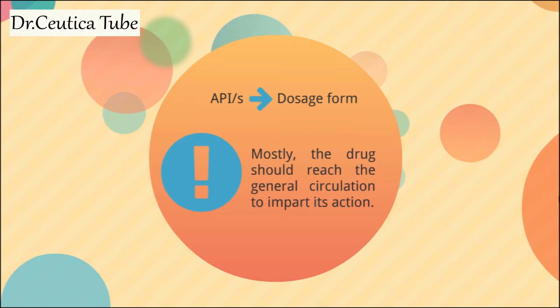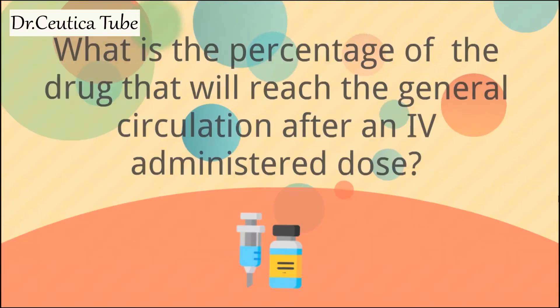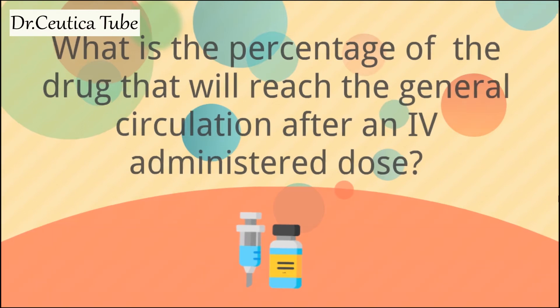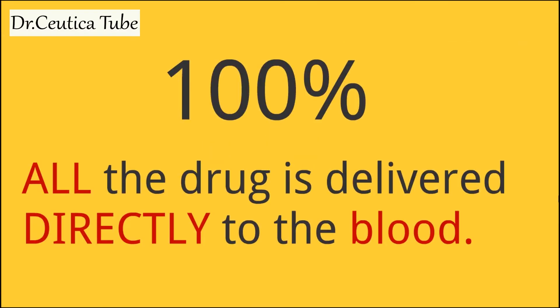Generally, we aim at making the drug reach the general circulation, because from there it will travel its way to the desired site of action. So we make our best to make a certain concentration reach the bloodstream. If a drug is administered through an IV route, what is the estimated percentage of the drug that can reach the general circulation? It's 100%, because all of the drug is delivered directly to the bloodstream when taken intravenously.